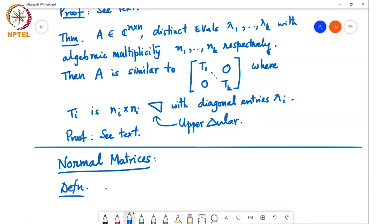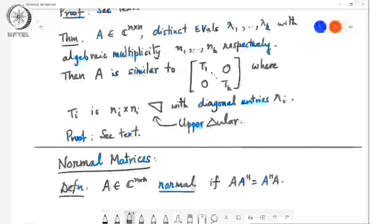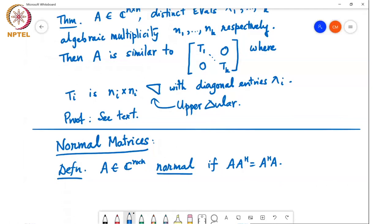A in C^(n×n) is normal if AA^H = A^H A. So any matrix for which this is true is called a normal matrix. These normal matrices are a generalization of unitary, symmetric, and Hermitian matrices.